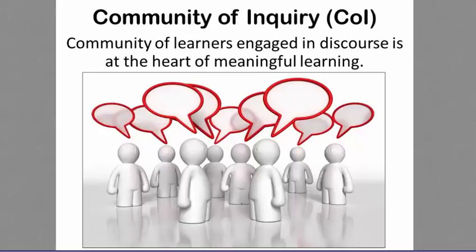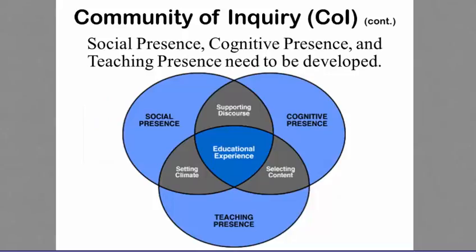A community of learners engaged in rational discussion and communication using critical thinking skills is at the heart of meaningful learning. According to Garrison, the Community of Inquiry framework represents a process by which meaningful learning experiences can be designed and delivered, accomplished through three interconnected components: social presence, cognitive presence, and teaching presence. Social presence is the ability of individuals to project their personalities in the learning environment while identifying with the group. Cognitive presence is the way individuals make meaning through rational discussion, communication, and reflection. Teaching presence is the way learning environments are created and facilitated for student meaning-making.